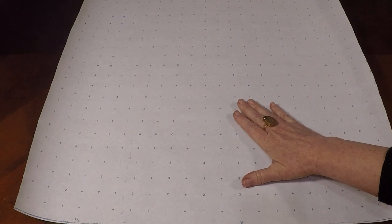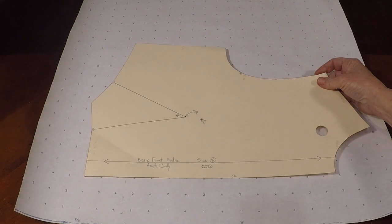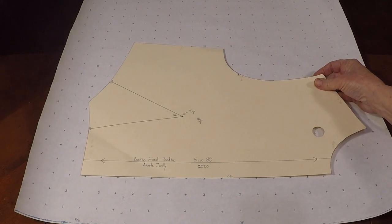Well, let's get started. So here's my pattern paper and I'm going to grab my basic one dart front bodice. This is full scale.